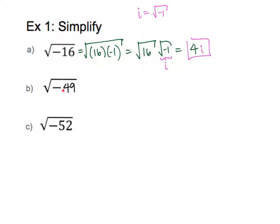Let's try this problem: the square root of negative 49. Again I'll ignore the negative sign for a moment — I know the square root of 49 is a nice number, it's 7. Because I know there's a negative, I need to put an i next to this number. So the answer is 7i. Basically: take the square root of the regular number, and if it's negative, put an i next to it.